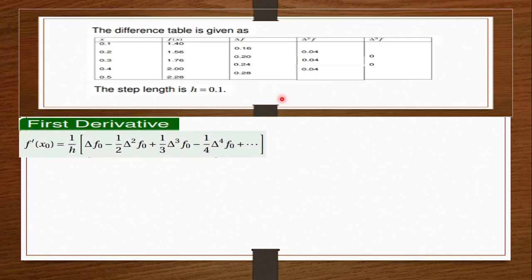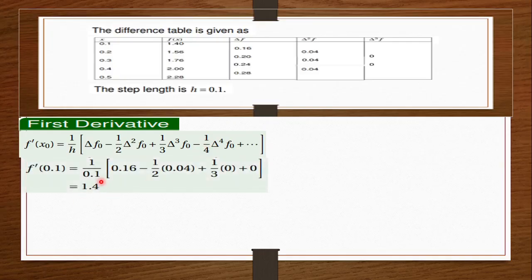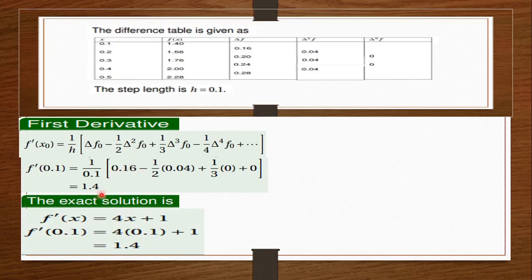For the first derivative, we use the formula and plug in values from the table. Δf₀ = 0.16, h = 0.1, Δ²f₀ = 0.04. Δ³f₀ is zero, and Δ⁴f₀ is also zero (zero minus zero). So the remaining terms are all zero. Plugging these in, we find the value to be 1.4. The exact solution gives the same result — there is no difference between the approximation and the exact solution, showing this method actually works.